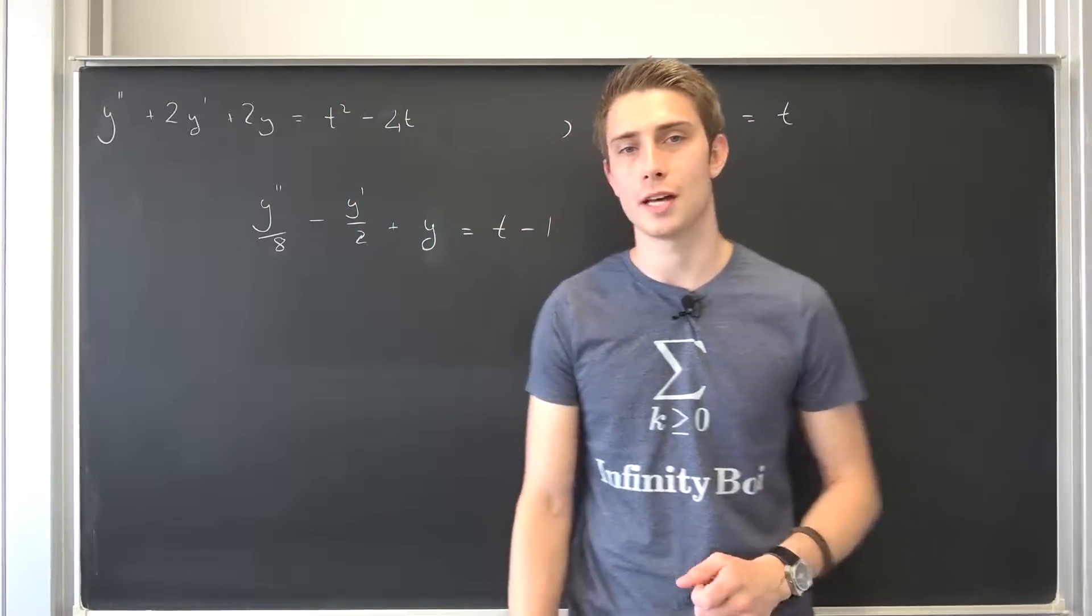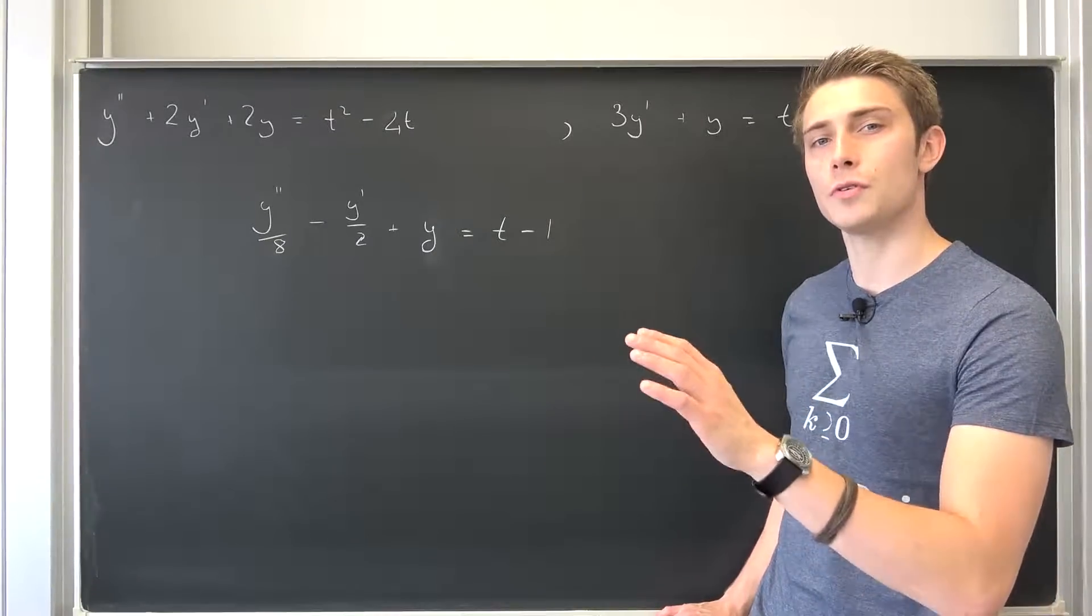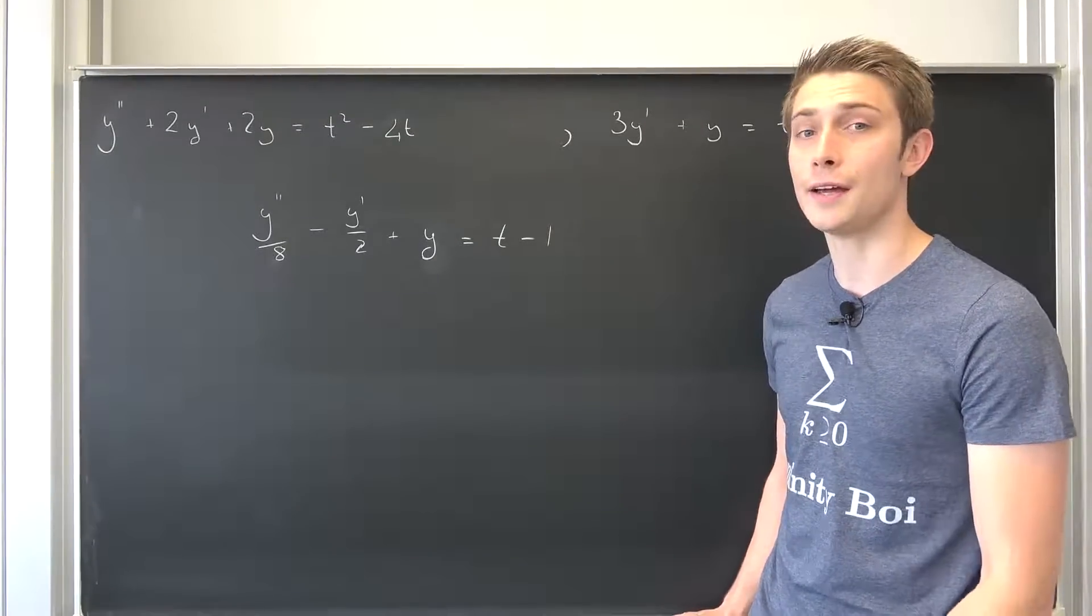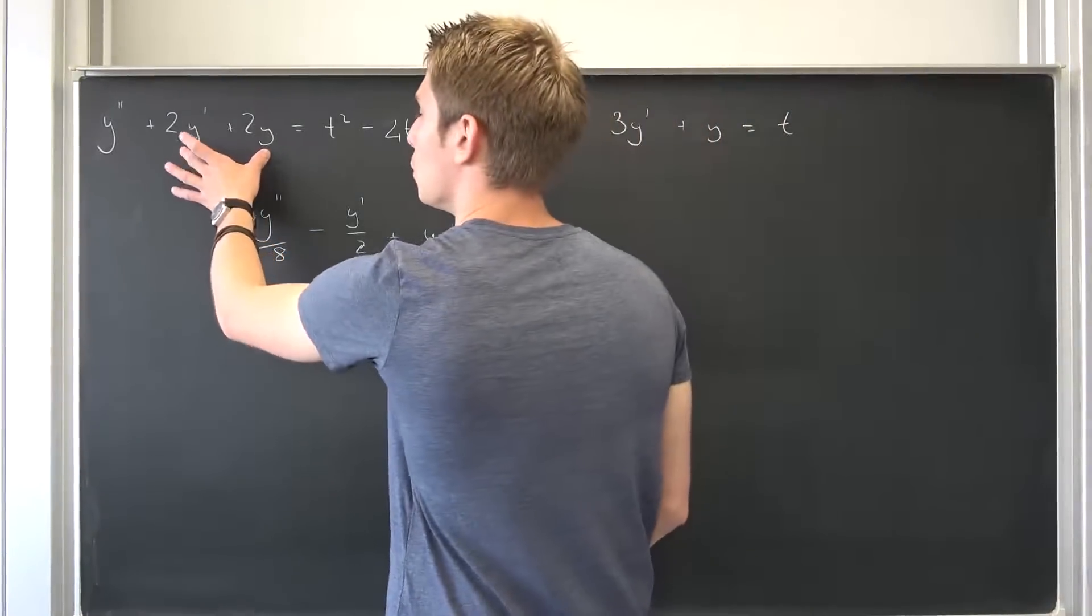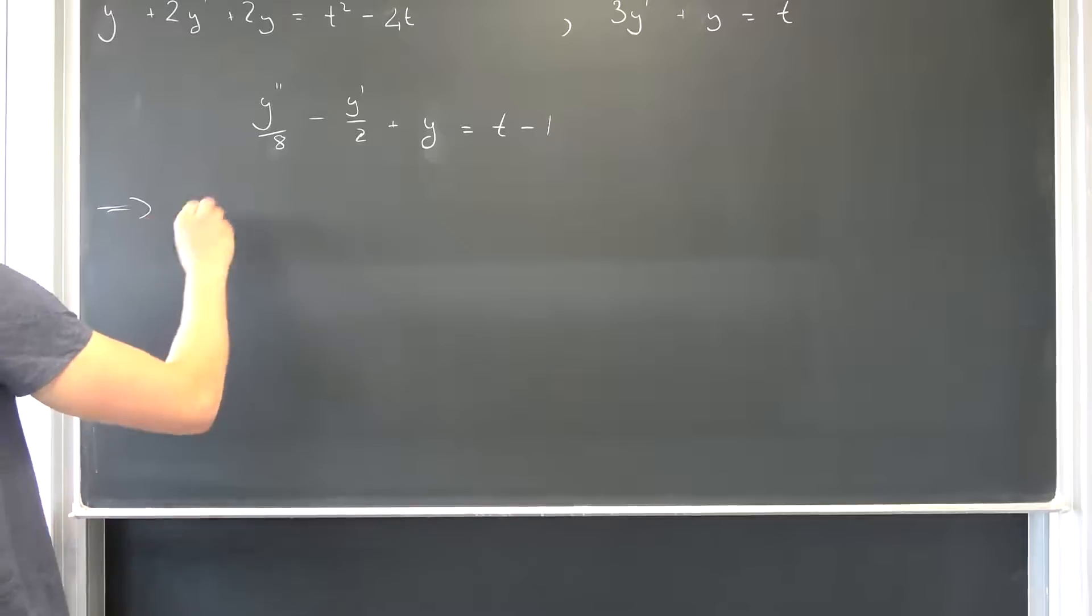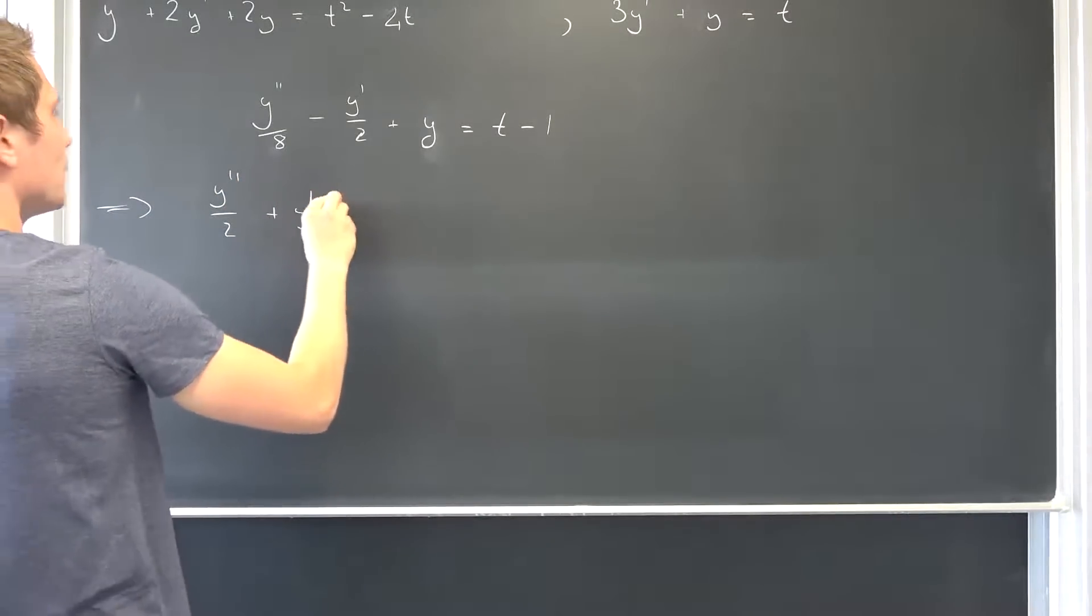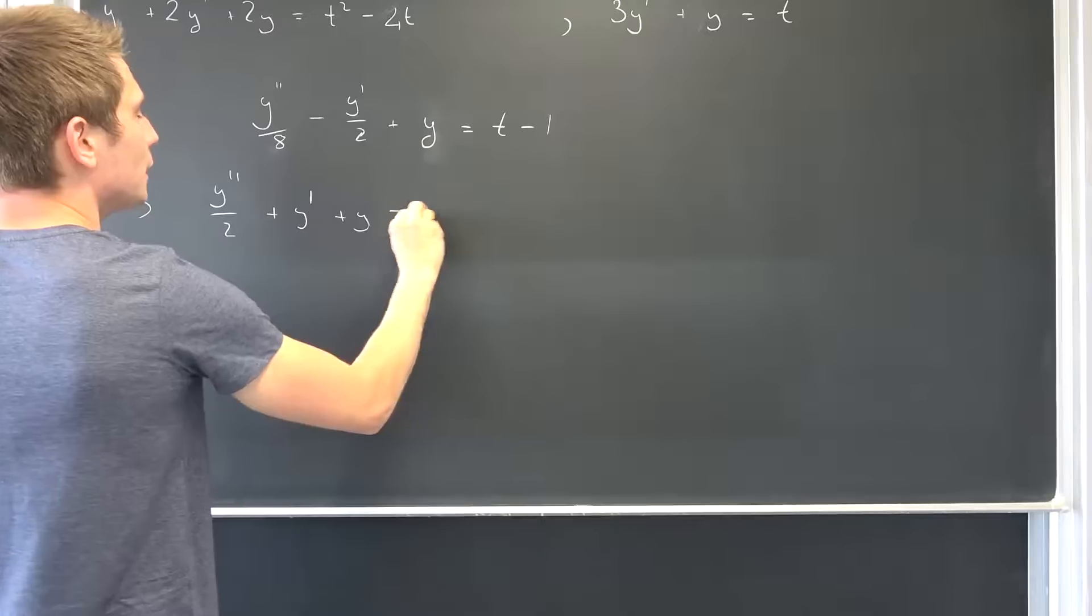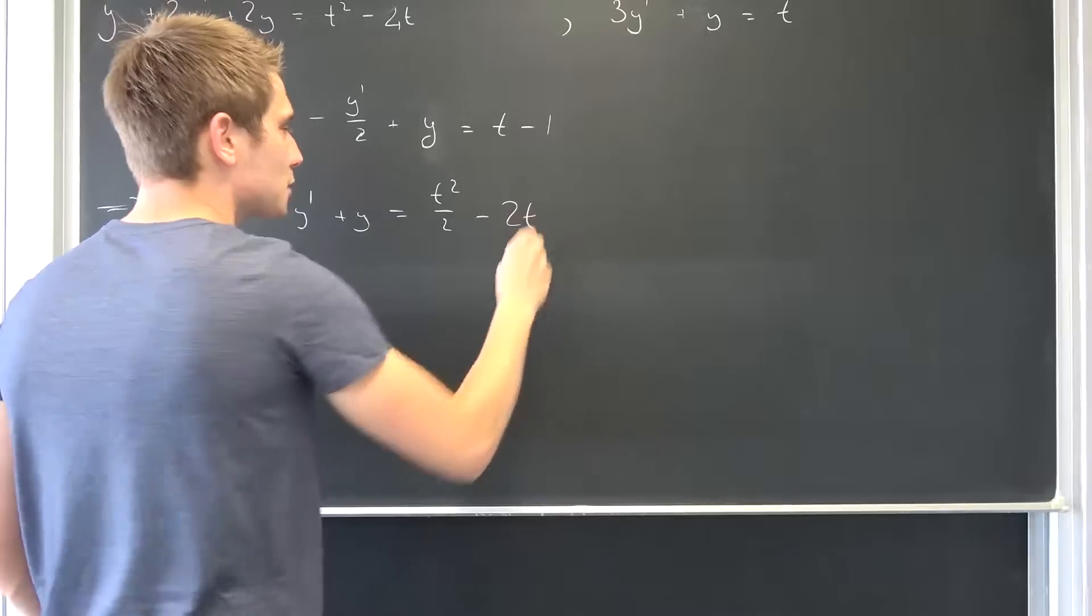What do all of those have in common? Let us do a few slight manipulations. Maybe you can see then what they have in common. Let us divide both sides by two on the first one. Meaning on the first one we are going to get y double prime over 2 plus y prime plus y is nothing but t squared over 2 minus 2 times t.